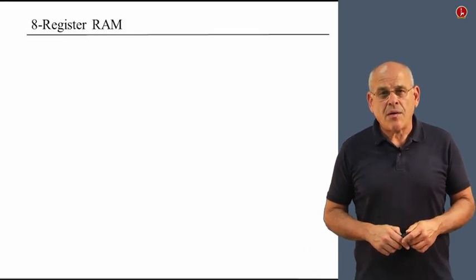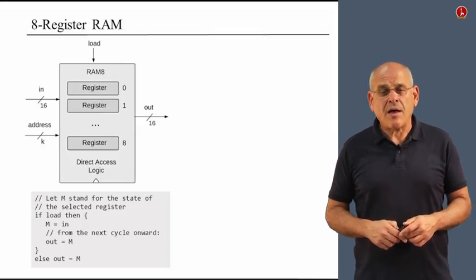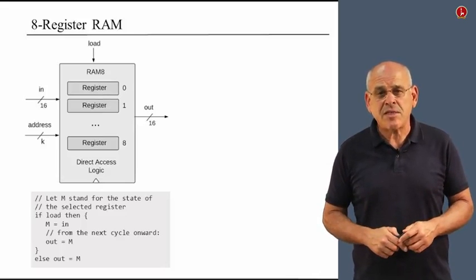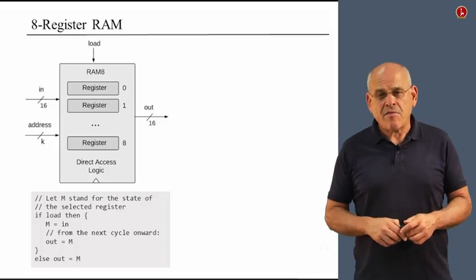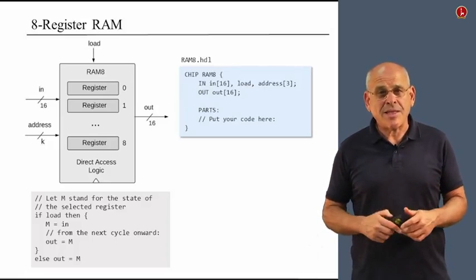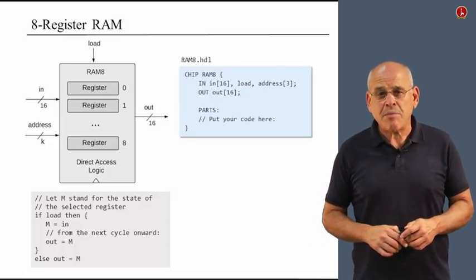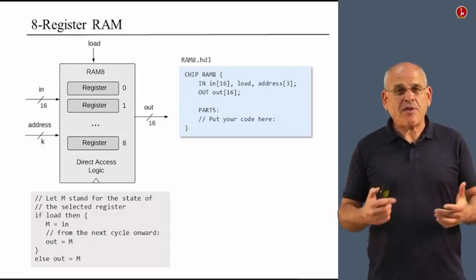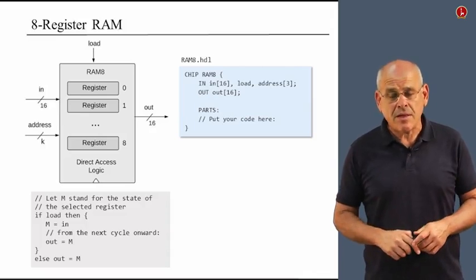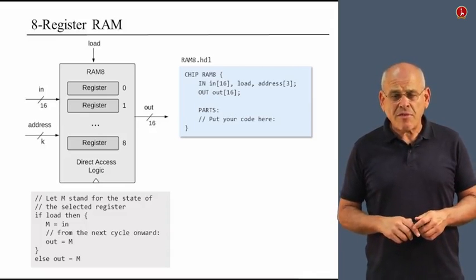So now we are ready to move on and build our first RAM device consisting of eight registers. Here is the API of this chip. Here is the stub file that describes its input and output pins. So now that we have all this information, let's figure out how we can actually build such a RAM device.